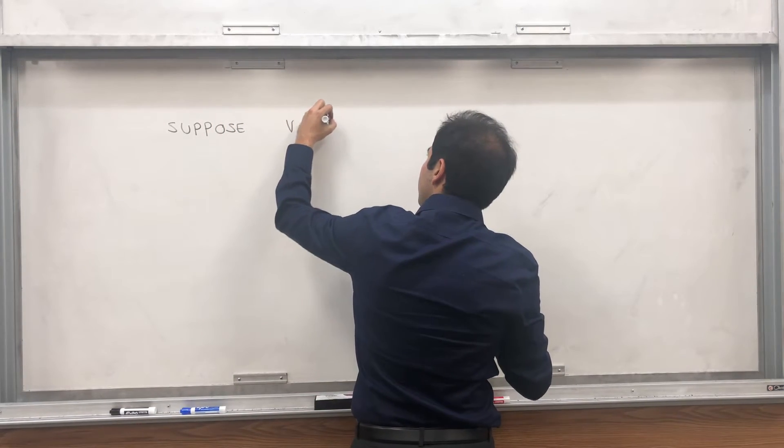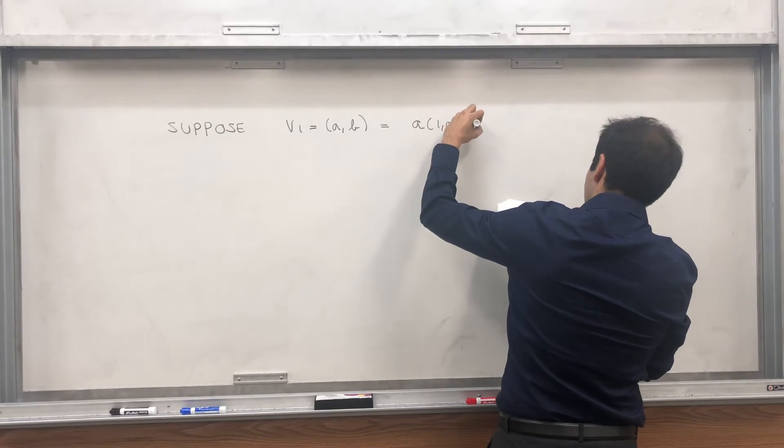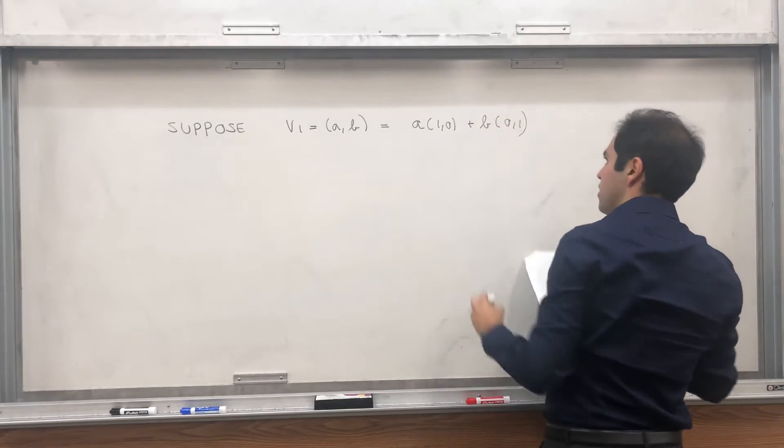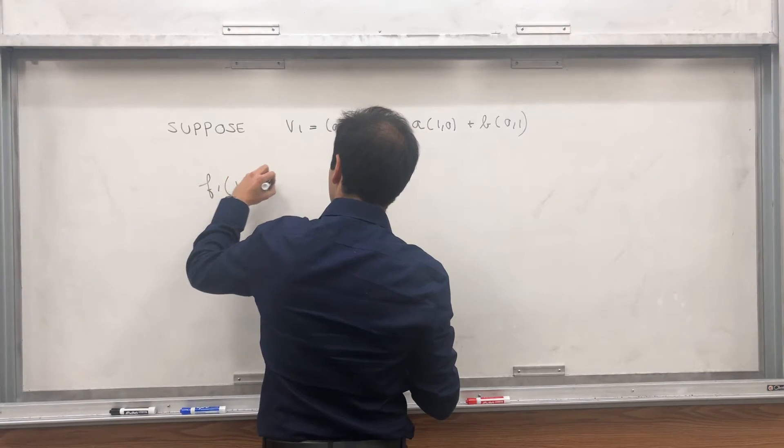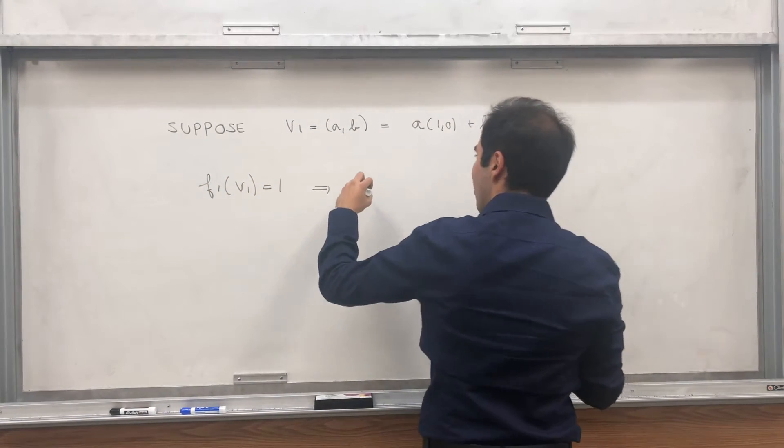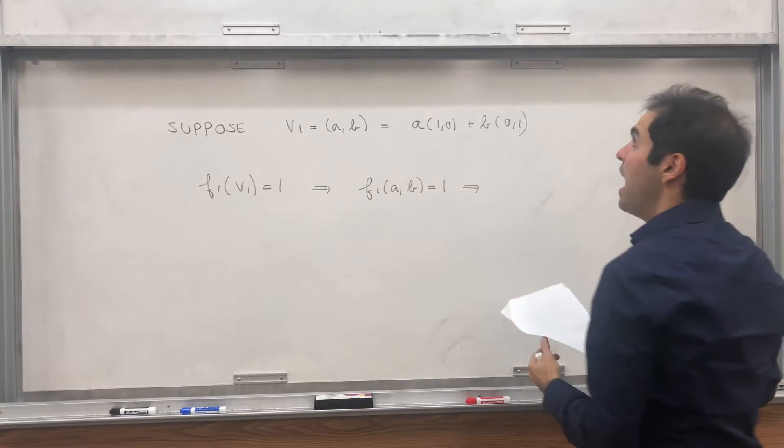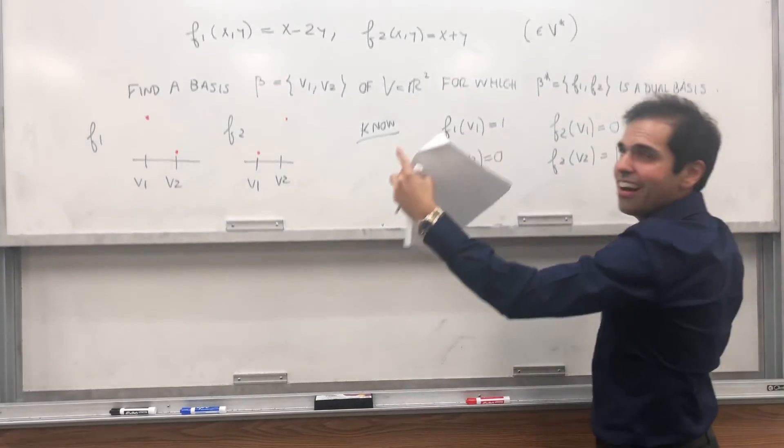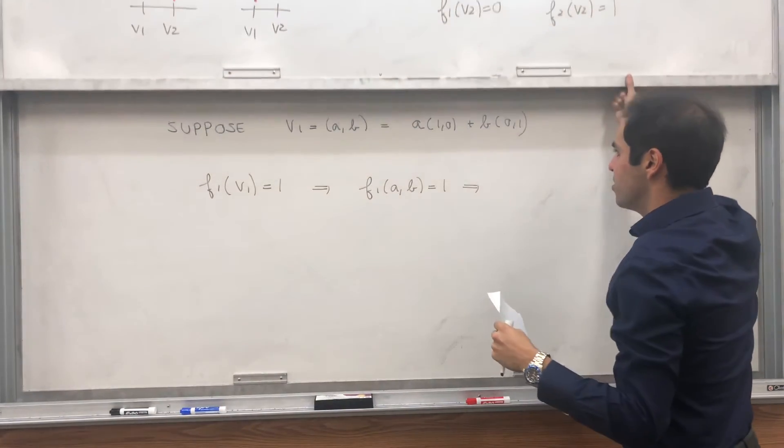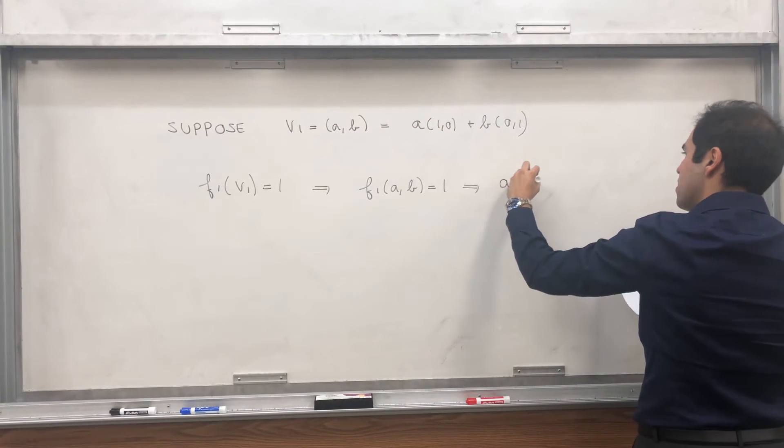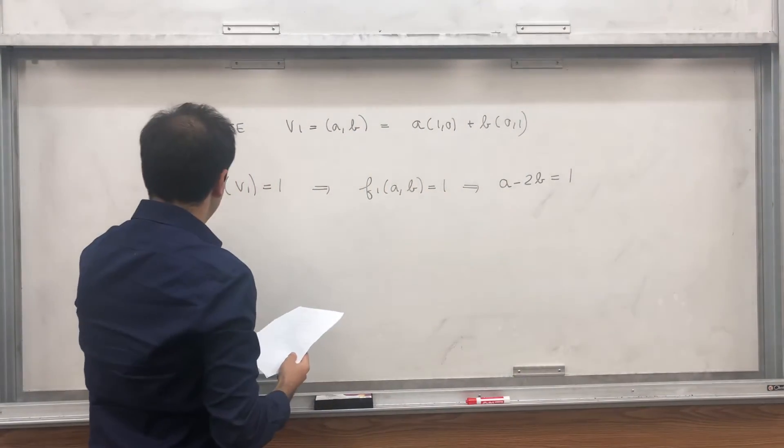So suppose V1 equals to AB equals to A times 1, 0, plus B times 0, 1. Then what do we know? We know f1 at V1 equals 1, so in particular, f1 at A comma B equals 1, but now let's use our definition of f1. Gotta use a definition at some point. f takes x and subtracts 2y, so this is A minus 2b. So A minus 2b equals 1.